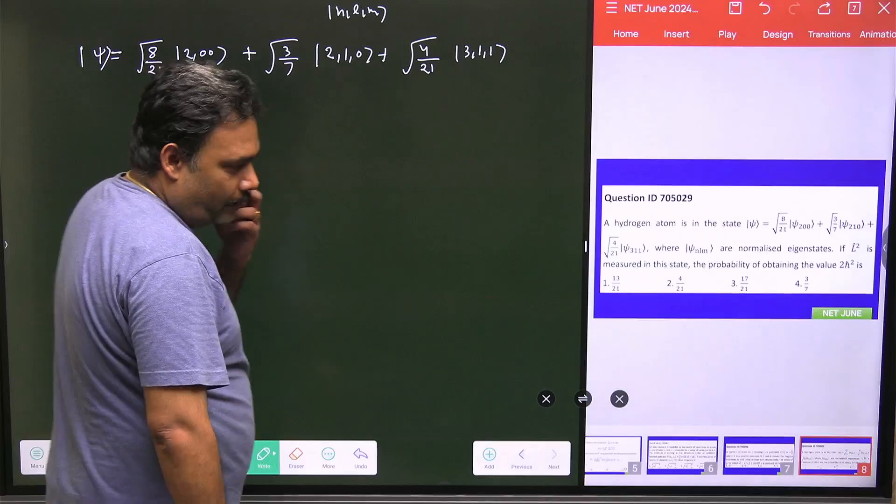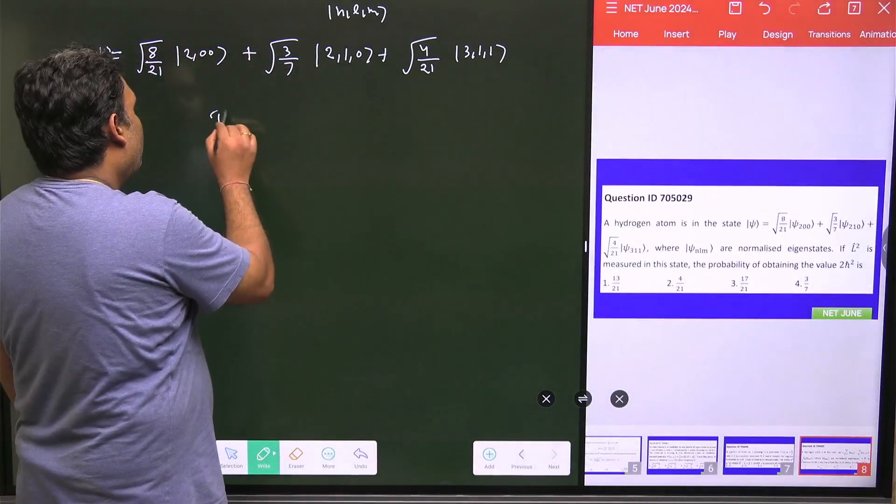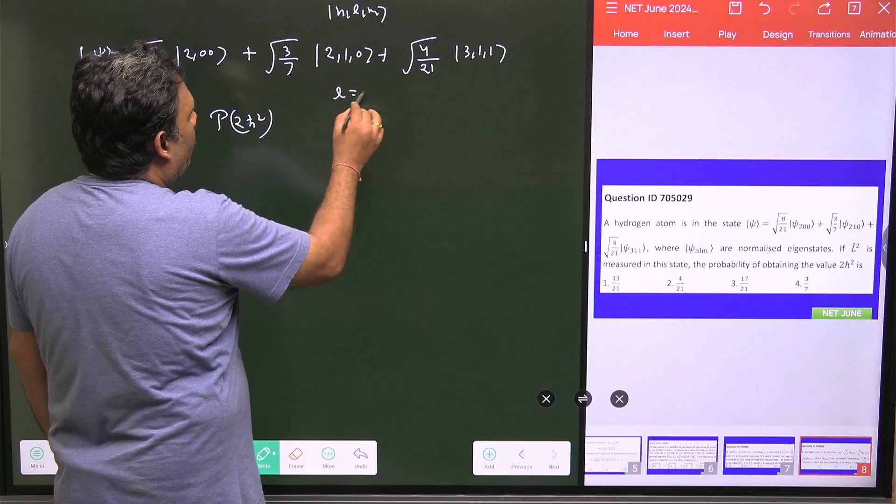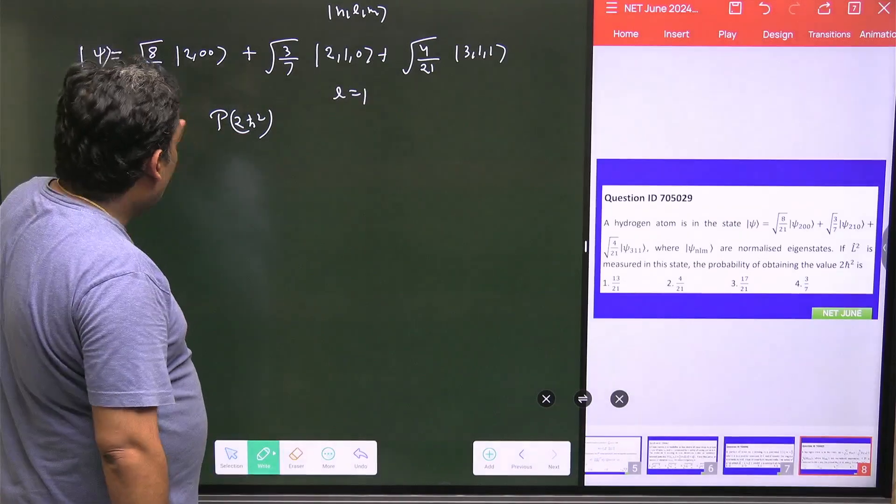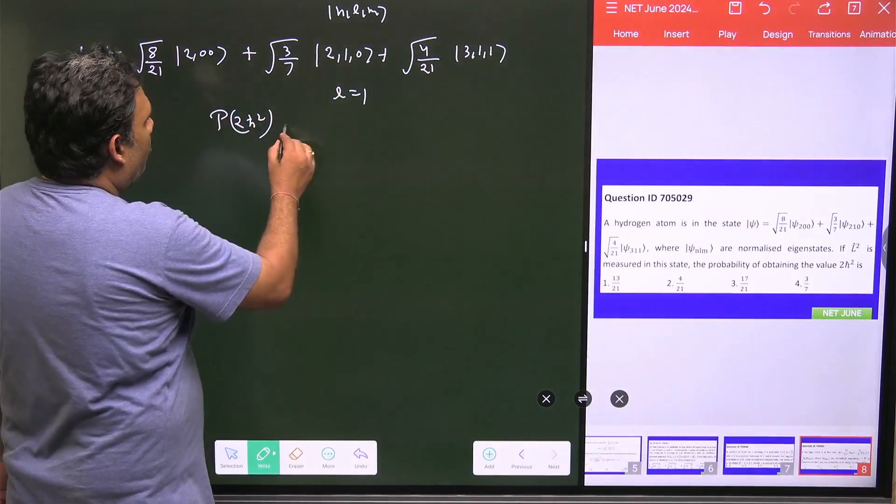And what we have to do, we have to just calculate the probability of getting 2ℏ². So we have to get the probability of 2ℏ². That means 2ℏ² will come from l equals 1. So 2ℏ² will be coming from this state also and this state also.